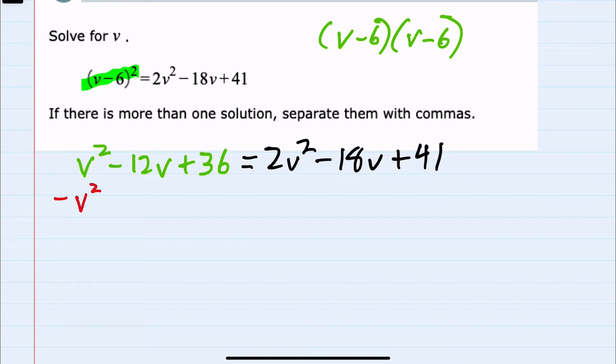So a minus v² would move that over to the right. A plus 12v on both sides would move that to the right. And then a minus 36 would move the last term over to the right.